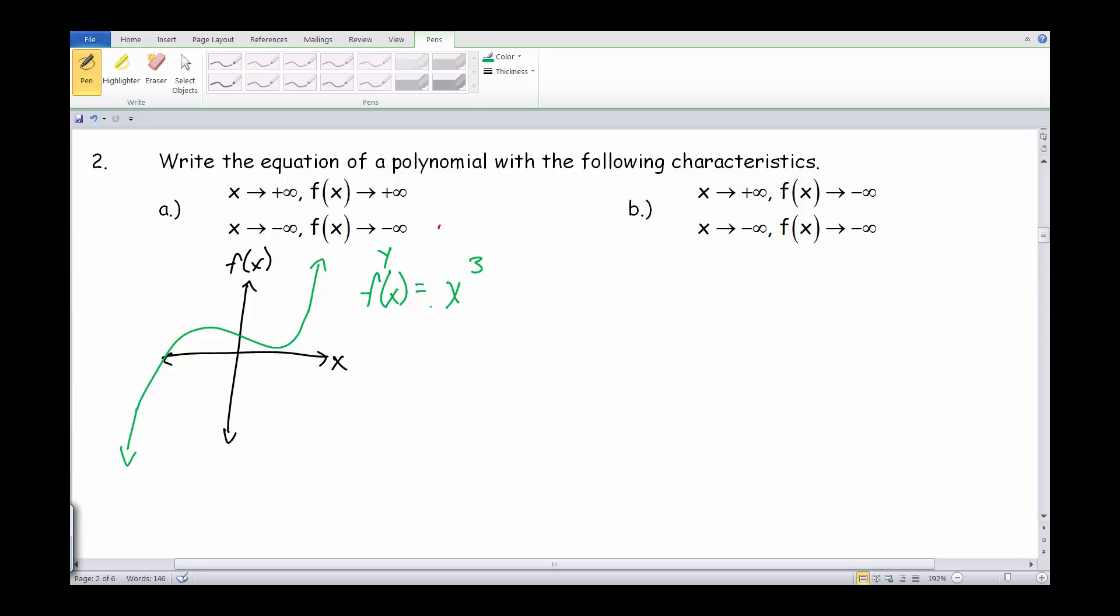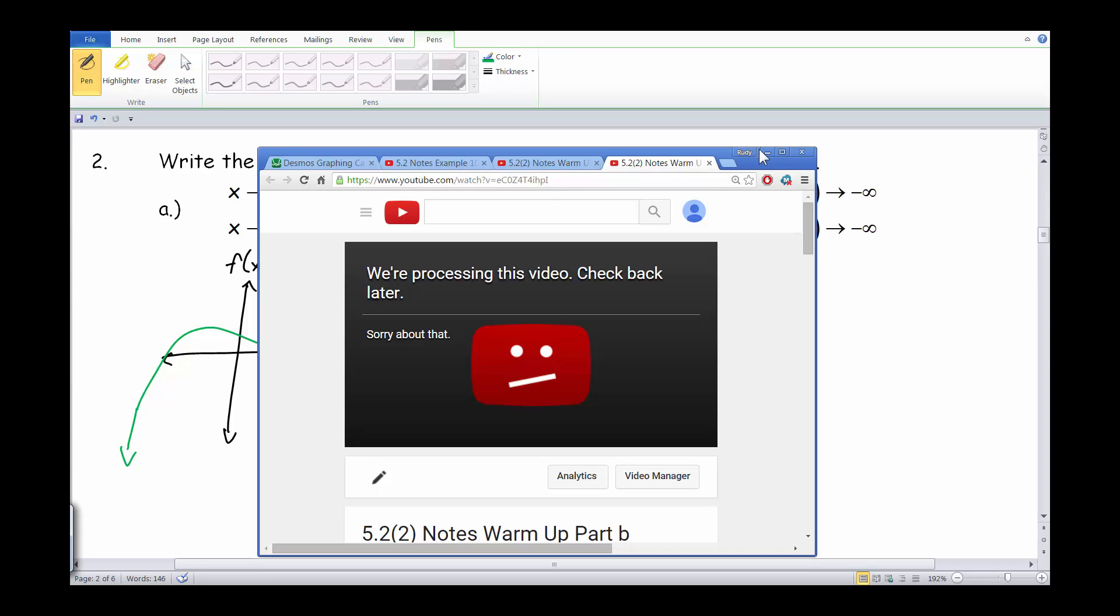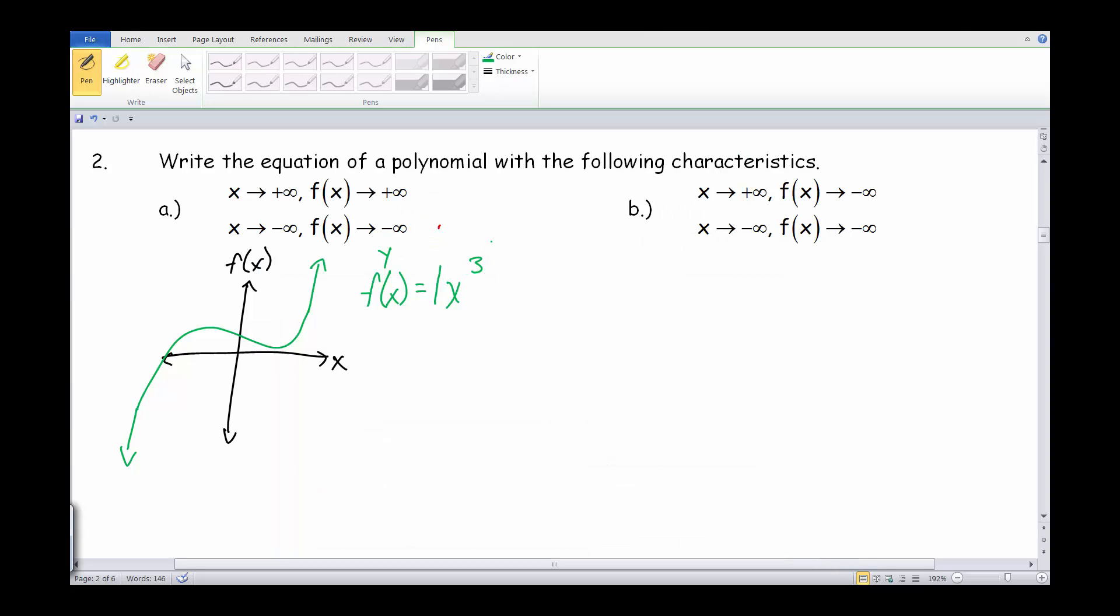And then for the leading coefficient, well, because we have an s facing the normal way, we know that this has to be positive over here, so it's not flipped. So you could throw a 1, you could throw a 2 in front, it doesn't really matter. You could throw any kind of number in front for that, and then you'd be good.